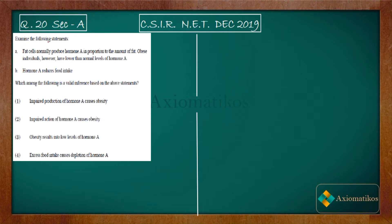Examine the following statements. Fat cells normally produce hormone A in proportion to the amount of fat. Obese individuals however have lower than normal level of hormone A. Hormone A reduces food intake. Which of the following is a valid inference based on the above statements?